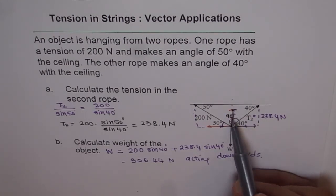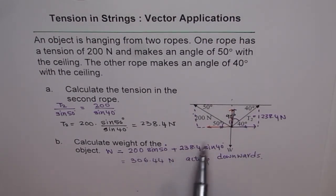Those will be balancing out the weight. Those are sine components of these tensions. 200 sine of 50 degrees and 238.4 sine of 40 degrees when added together is equal to the weight of the object. We got that to be 306 newtons. Thank you.